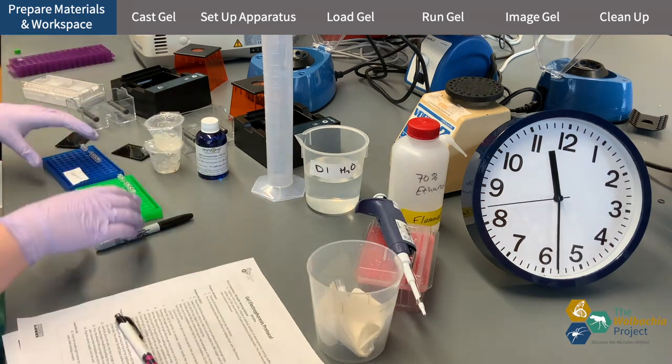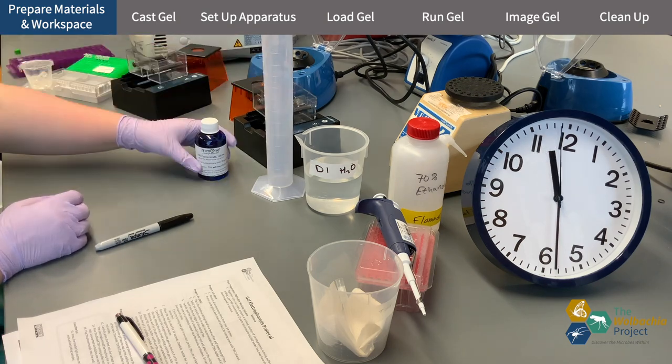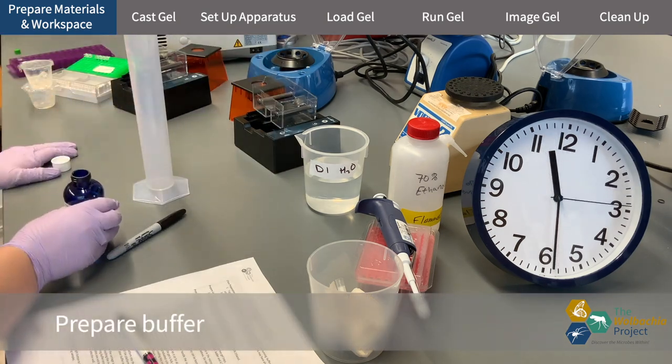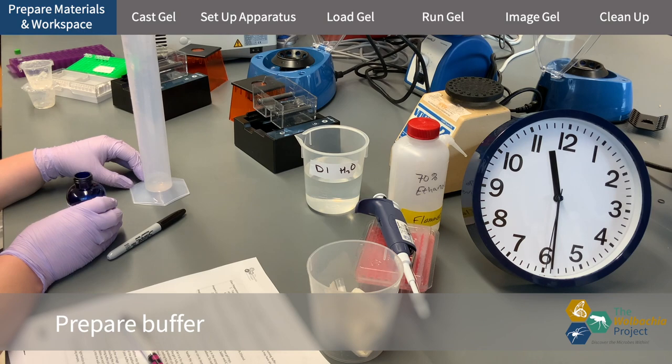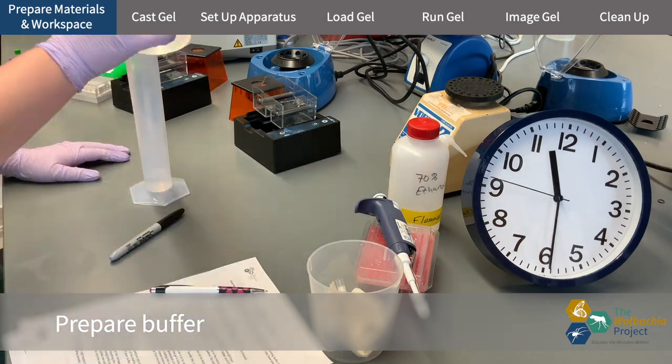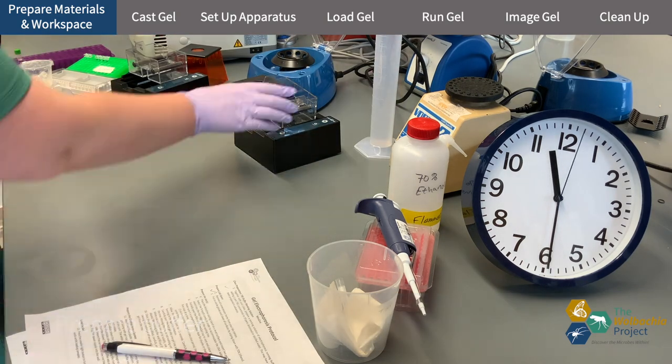Once I have everything I need I prepare the buffer. This is the same buffer that's used to make the gel. In this case I'm using Mini One's system in gel cups so I'm diluting the buffer they sent me.